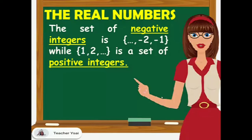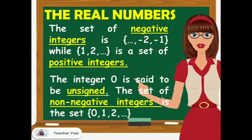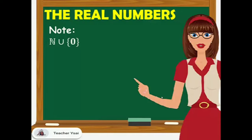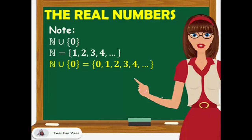The set of negative integers contains the elements from negative 1, negative 2, up to the negative infinity, while the elements 1, 2, up to positive infinity form the set of positive integers. The integer 0 is said to be unsigned. The set of non-negative integers is the set from 0, 1, 2, up to the positive infinity. Note that the set of natural numbers union with the set containing 0 gives us the non-negative integers: 0, 1, 2, 3, 4, up to positive infinity.